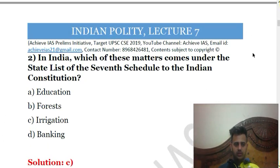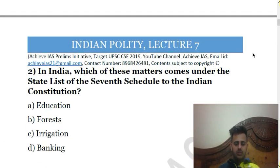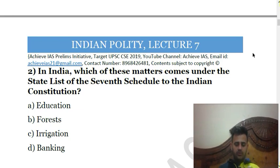The second question asks: in India, which of these matters come under the state list of the Seventh Schedule to the Indian Constitution? Options are: A) Education, B) Forests, C) Irrigation, D) Banking. In the Seventh Schedule we have three lists — the Union List, the State List, and the Concurrent List. The Union List contains subjects on which only the Union Government makes laws.